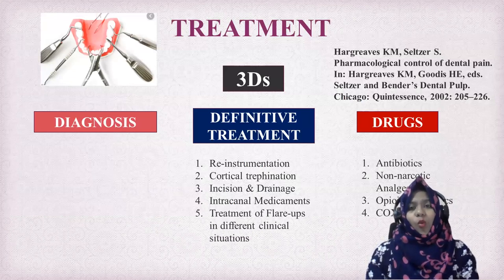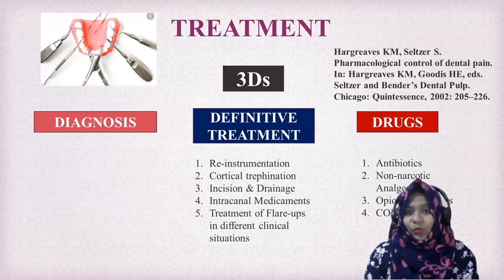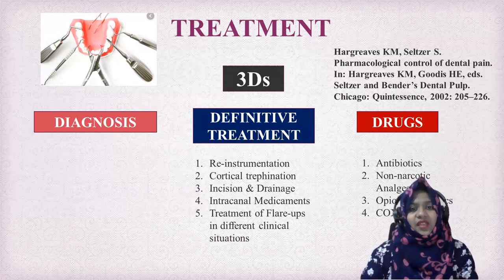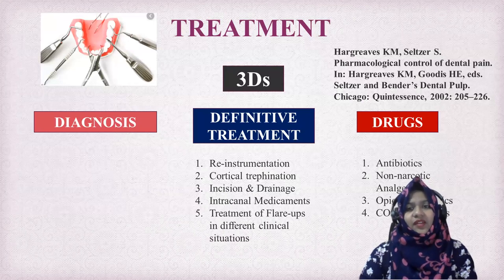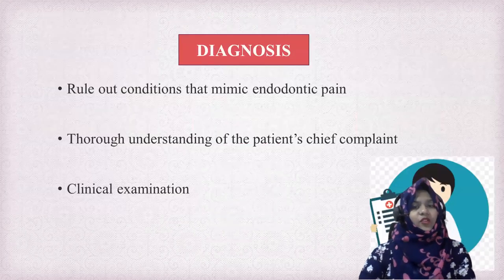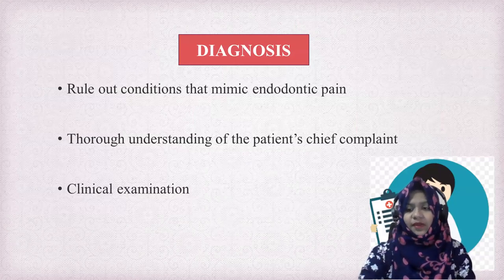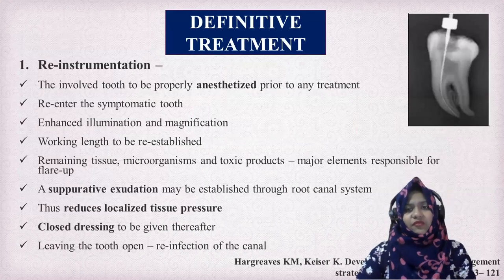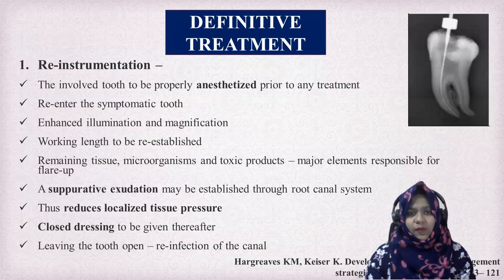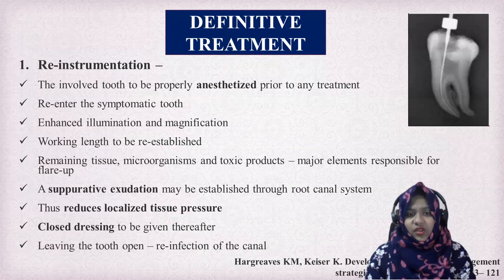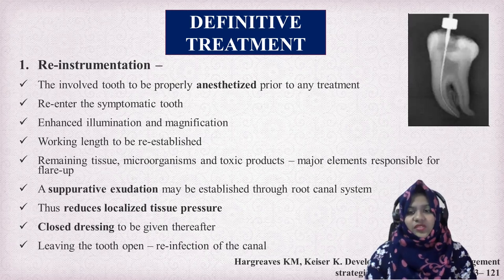If flare-up occurs, we should follow the three Ds: diagnosis, definitive treatment, and drugs. For diagnosis, we should rule out conditions that mimic endodontic pain, with thorough understanding of the chief complaint and thorough clinical examination. For definitive treatment, the first step is re-instrumentation. The involved tooth should be properly anesthetized before re-instrumentation with enhanced illumination and magnification. The working length should be re-established. There may be suppurative exudation that reduces the localized tissue pressure, and a closed dressing should be given thereafter.